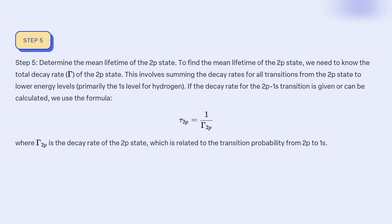Step 5: Determine the mean lifetime of the 2p state. To find the mean lifetime of the 2p state, we need to know the total decay rate gamma of the 2p state. This involves summing the decay rates for all transitions from the 2p state to lower energy levels, primarily the 1s level for hydrogen. If the decay rate for the 2p→1s transition is given or can be calculated, we use the formula: tau_2p = 1 / gamma_2p, where gamma_2p is the decay rate of the 2p state, related to the transition probability from 2p to 1s.